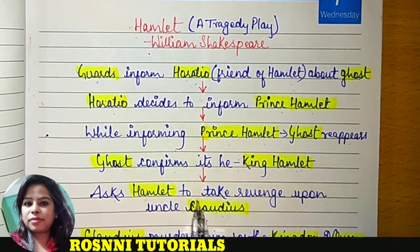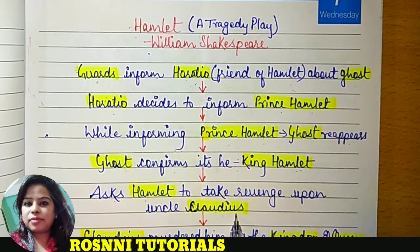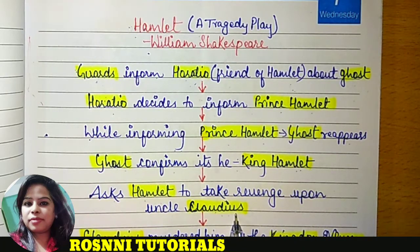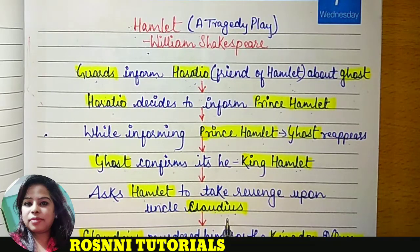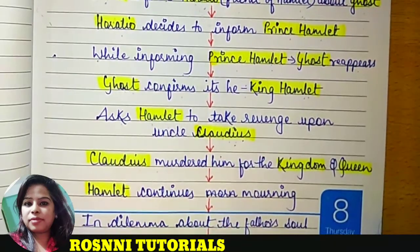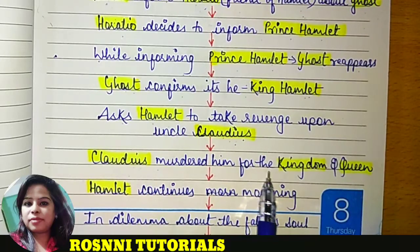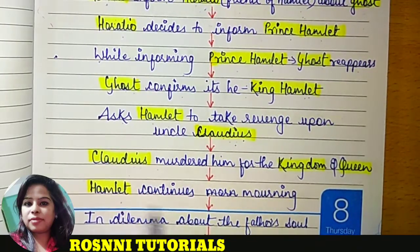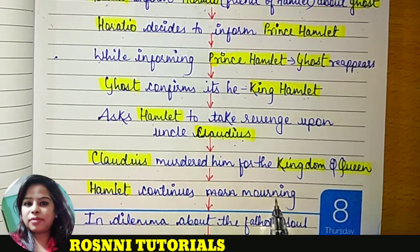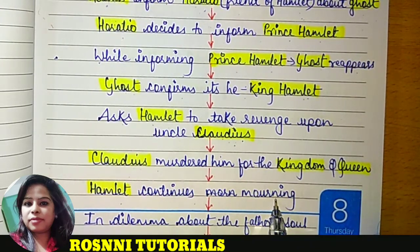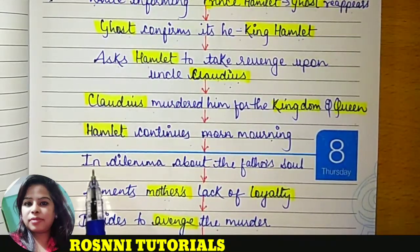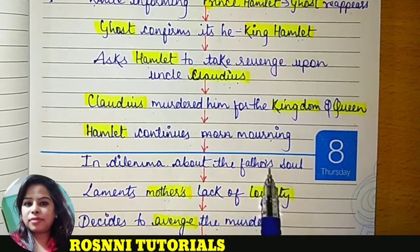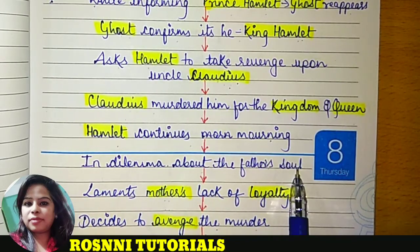King Hamlet asks Prince Hamlet to take revenge upon uncle Claudius. King Hamlet told Prince Hamlet to take revenge for his murder, because it was Claudius who had murdered him with proper planning. Claudius had murdered him for the kingdom and the queen. Now Hamlet continues mourning and becoming sad for the loss of his father's life. But still he is in dilemma whether the soul is of his father or not.